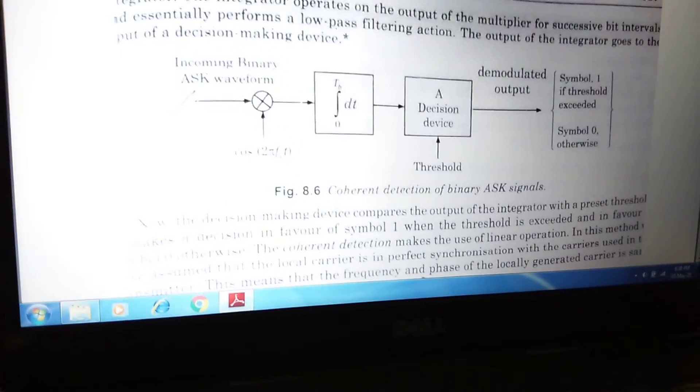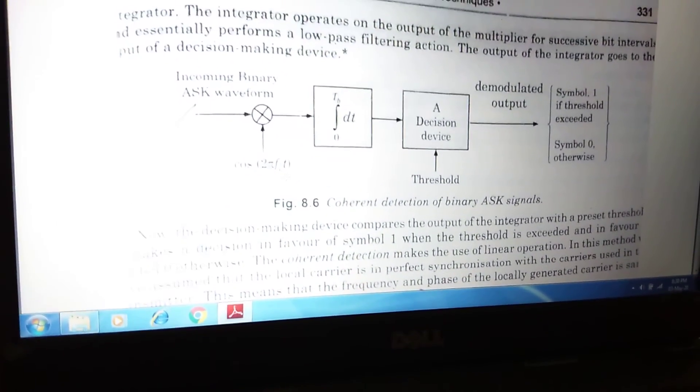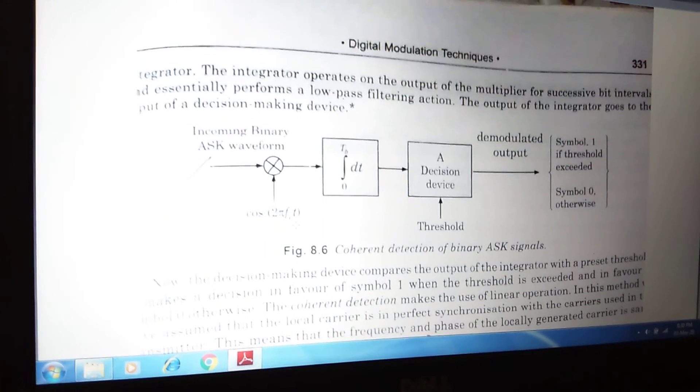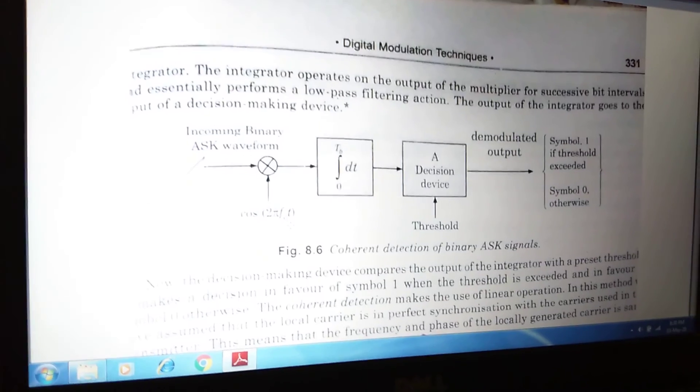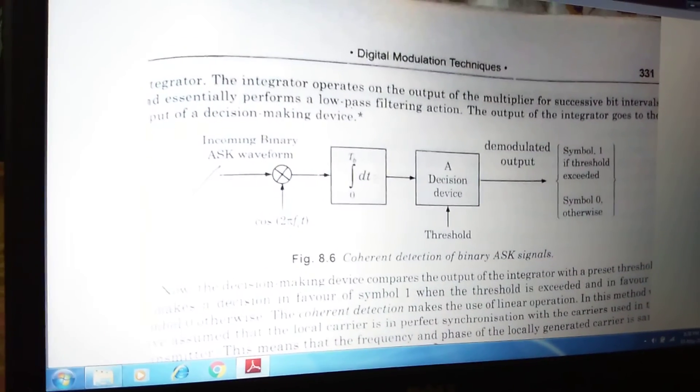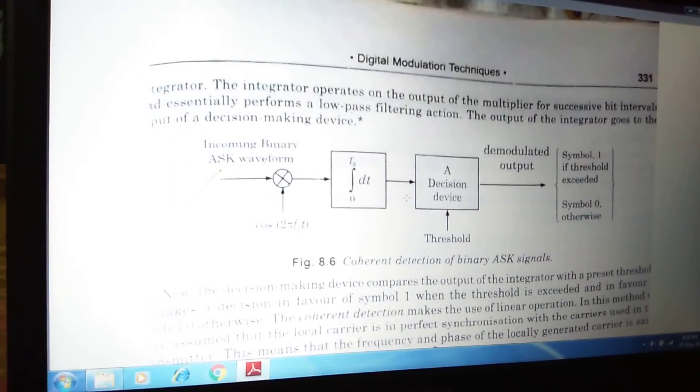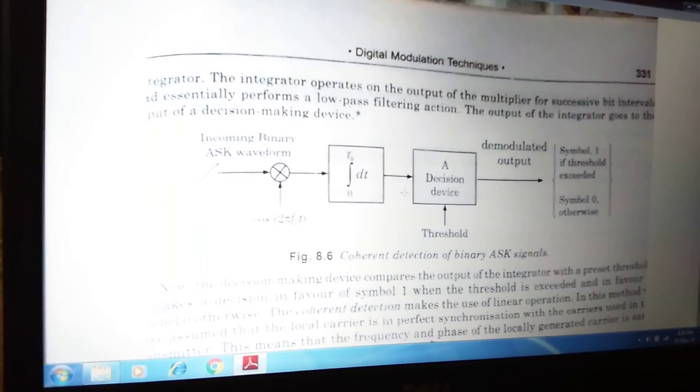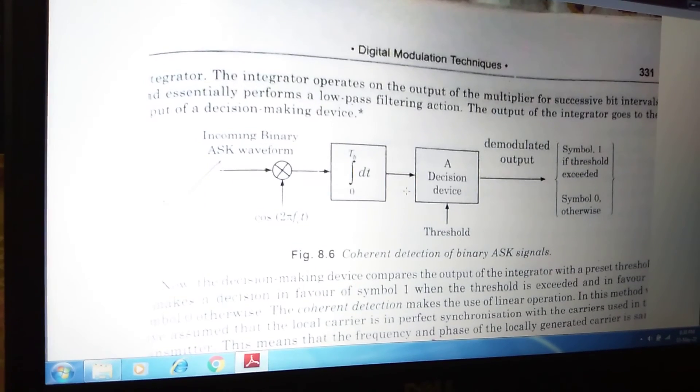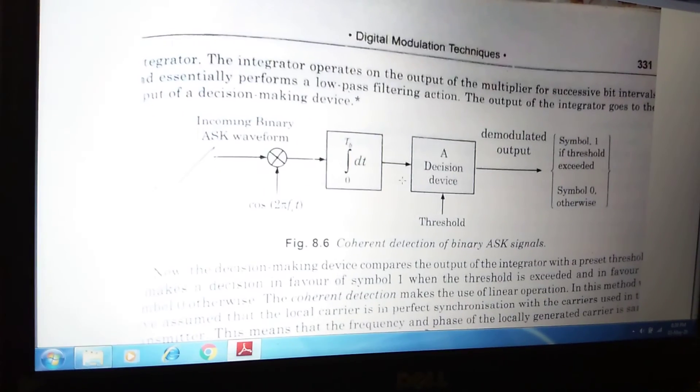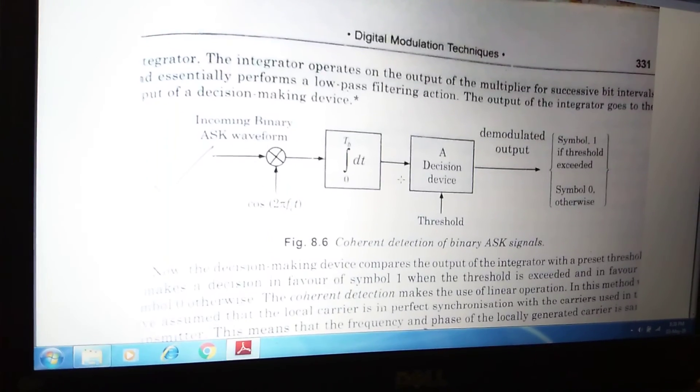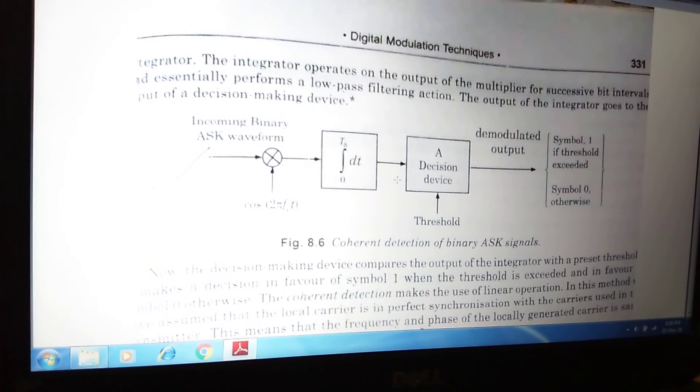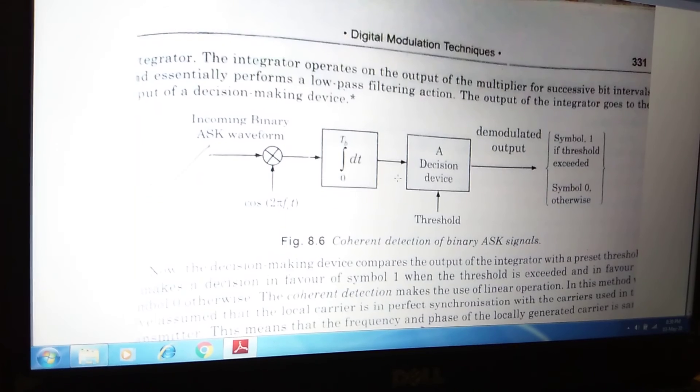What is the function of the decision device? Depending upon the certain inputs, the decision device will tell us the output is 1 or 0. Obviously, there should be some threshold amount. Depending upon the threshold value, we can decide we are getting 1 or 0. If we cross the threshold value, we will get symbol 1. If we are not able to cross the threshold value, we will get symbol 0. In this way, we will demodulate the signal. Depending upon the signal sequence, we are getting 1 and 0.